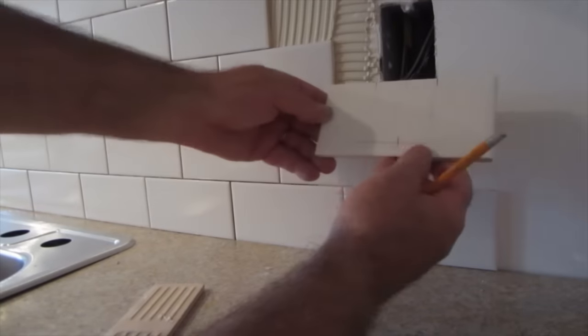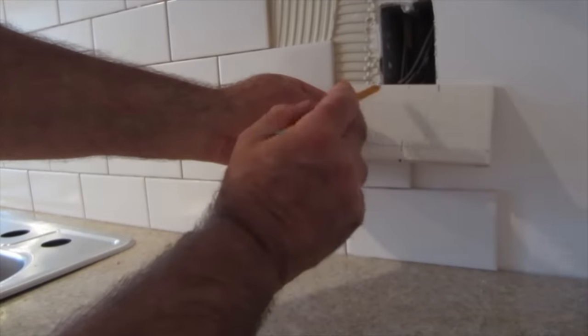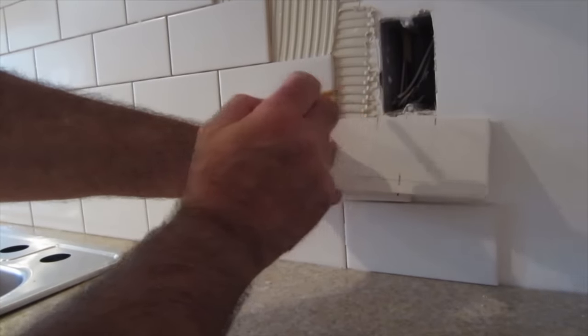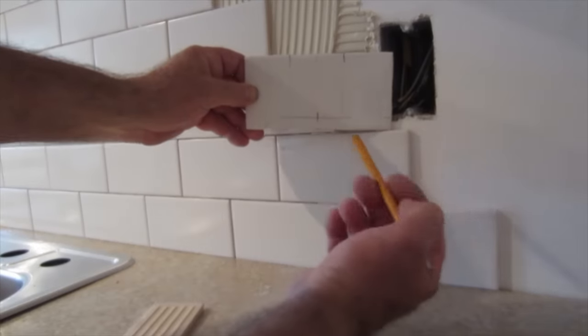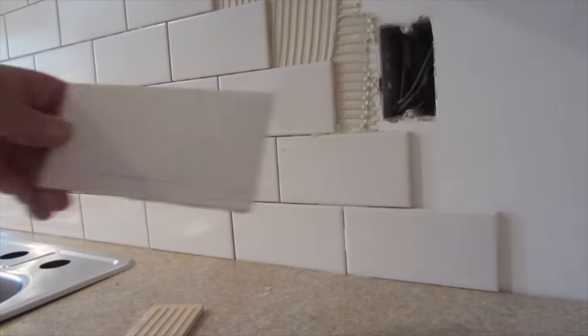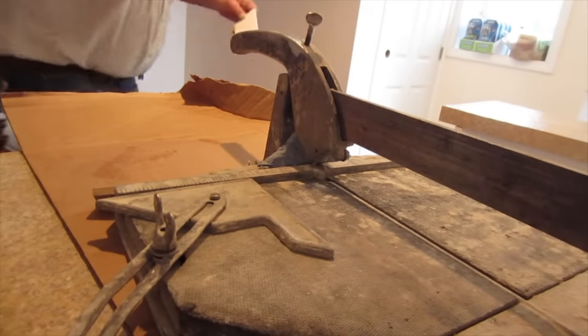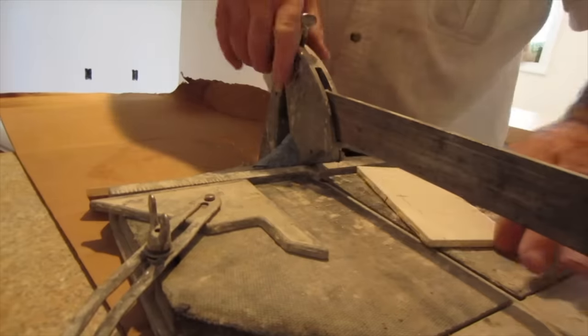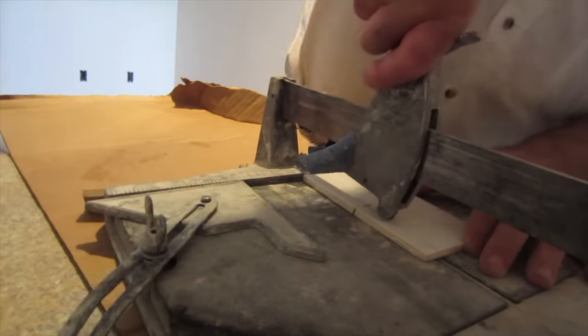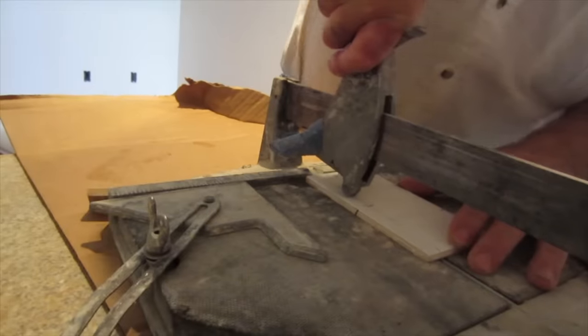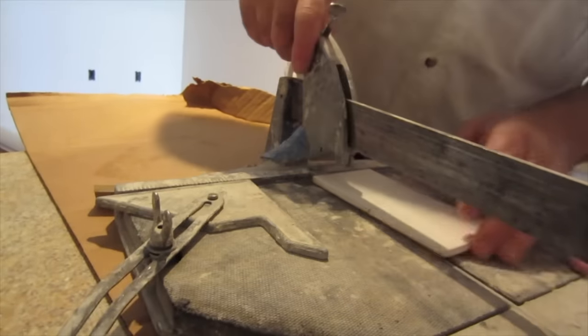So I've got this marked here, and that one's for the screw, and that's for the height. Then you bring your line across, and then you score. Cut that on the wet saw.